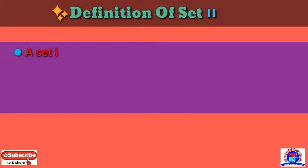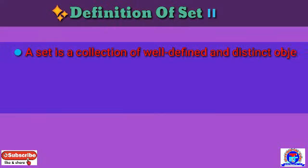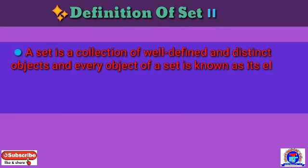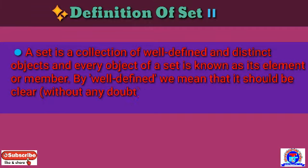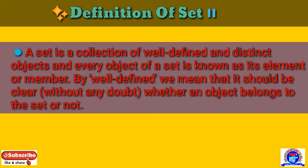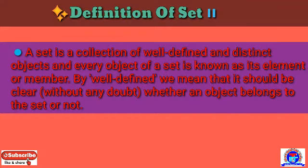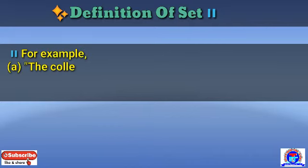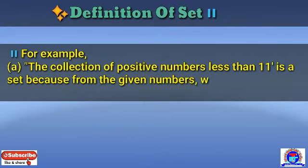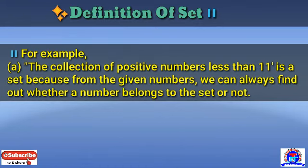Let's start. What is a set? A set is a collection of well-defined and distinct objects, and every object of a set is known as its element or member. By well-defined, we mean that it should be clear without any doubt whether an object belongs to the set or not. For example, suppose you think of the collection of positive numbers which are less than 11 as a set.